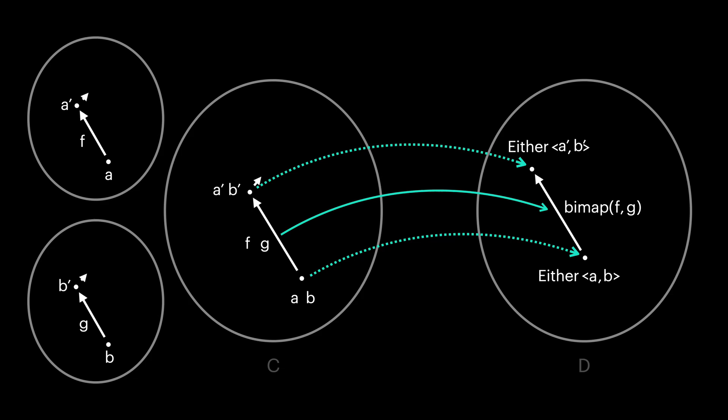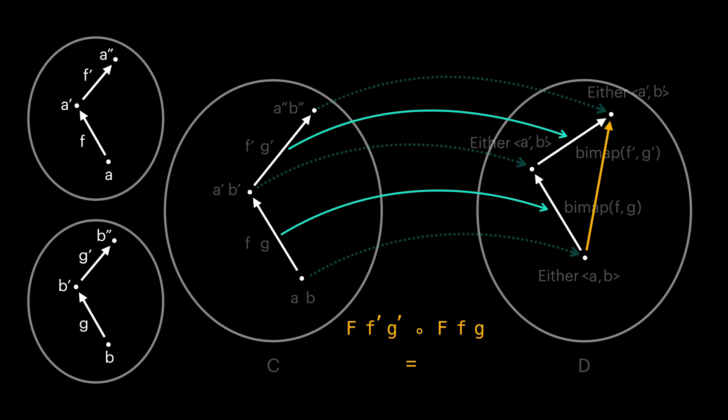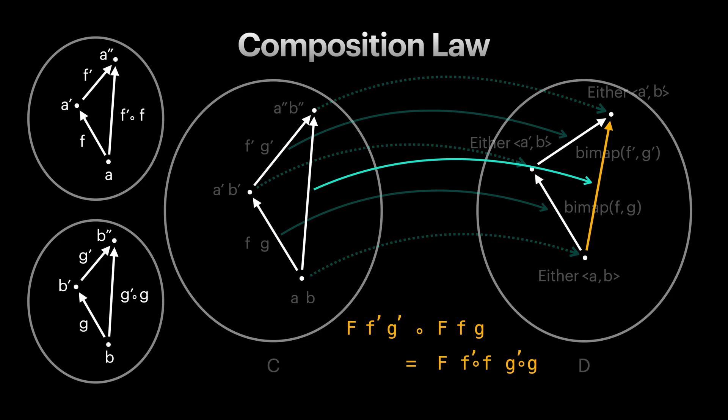For the composition law, let's assume we have another arrow following the first one. The composition law states if we map our arrows first and then compose them, it should lead to a same result as if we compose the first two arrows and then map the composed arrow. And this is the composition law for bifunctor.